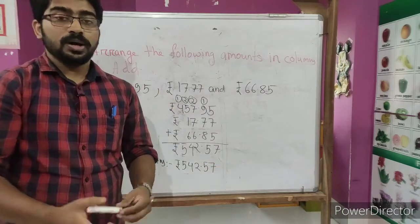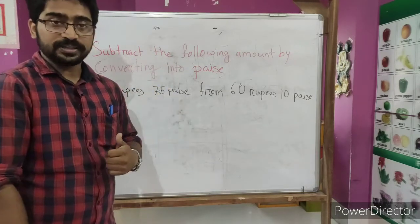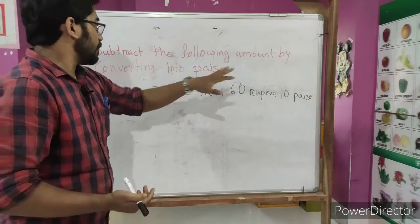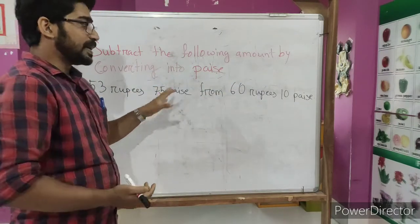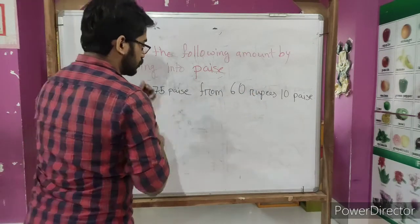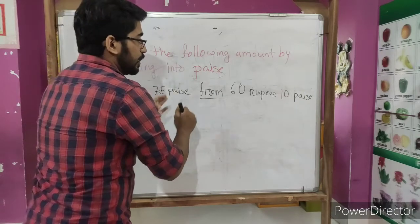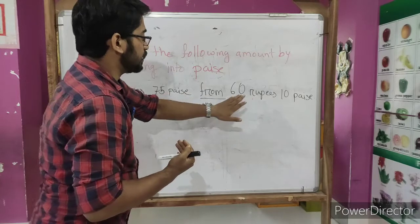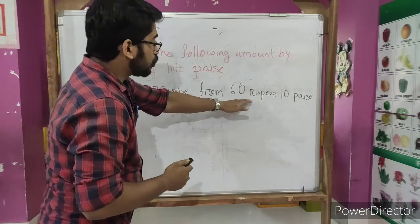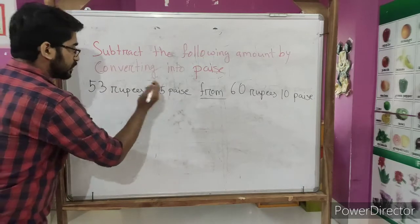Again like addition, we need to do the conversion and after that we need to subtract. Now subtract the following amount by converting into paise. So, subtract 53 rupees 75 paise from 60 rupees 10 paise. Most important, this word is most important - from. Whenever you get this word, that means it needs to be subtracted, and the greater number will be after 'from' and the smaller number will be before 'from'. So the bigger number from which we subtract is after 'from'.